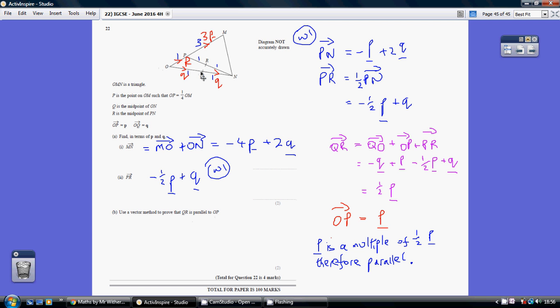So that's the way I'm going to go. Q to O is minus q, O to P is p, and P to R, as we've just worked out, is minus a half p plus q.